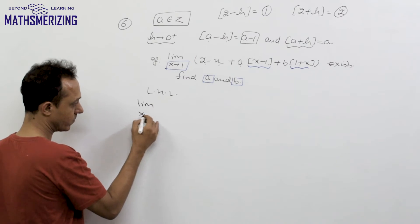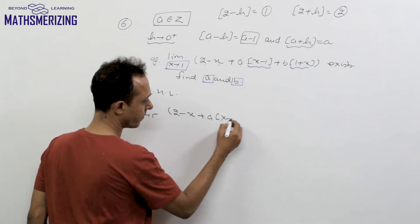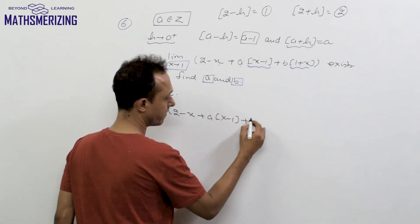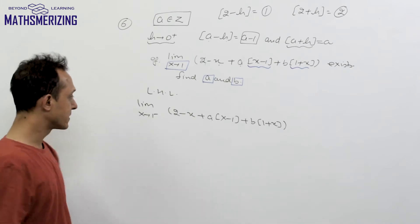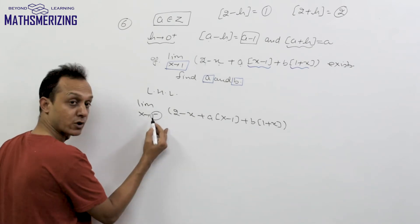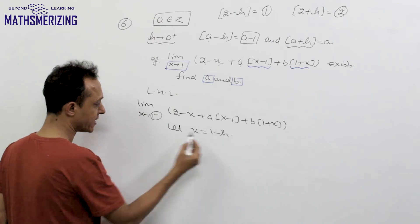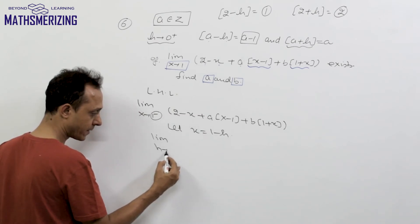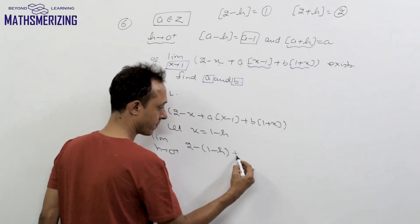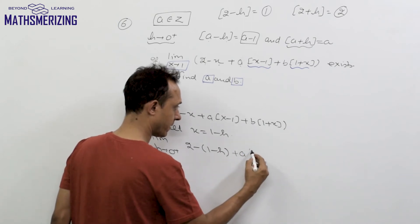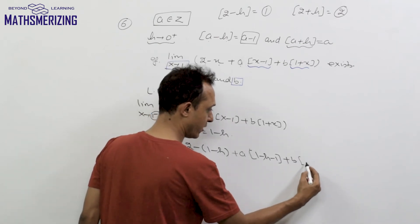Left-hand limit: limit as x tends to 1⁻ of [2 - x + a·GIF(x - 1) + b·GIF(1 + x)]. I substitute x = 1 - h, so as x → 1, h → 0⁺. This becomes: limit as h → 0⁺ of [2 - (1 - h) + a·GIF((1 - h) - 1) + b·GIF(1 + (1 - h))], which simplifies to limit h → 0⁺ of [(1 + h) + a·GIF(-h) + b·GIF(2 - h)].